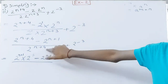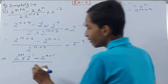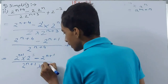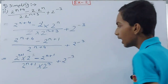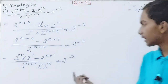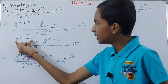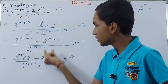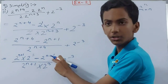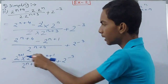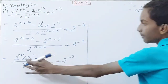In the denominator, 2^(n+4) is similarly broken down as 2^(n+1) × 2³. So the denominator becomes 2^(n+1)·2³ + 2^(−3). All three terms in the expression contain 2^(n+1), so we can factor it out.